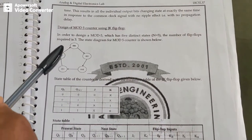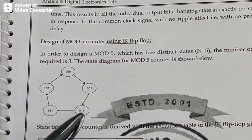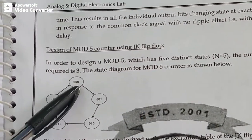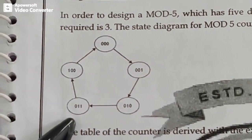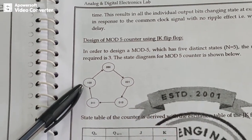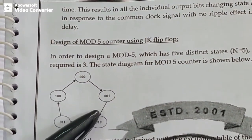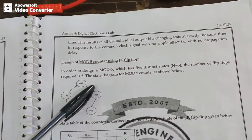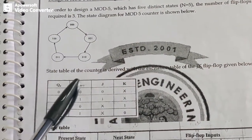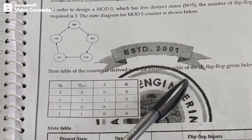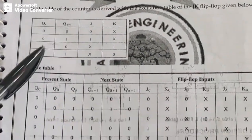In the design of mod 5, the counter has 5 states: 000, 001, 010, 011, 100, and then back to 000. So it has 5 states. To design a mod 5 counter, first we need to know the excitation table of JK. From the excitation table you have to derive the state table.